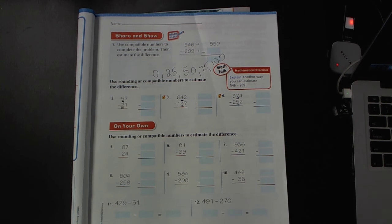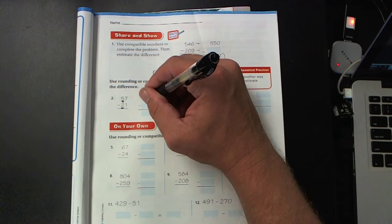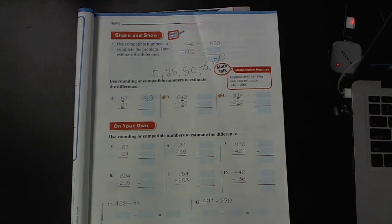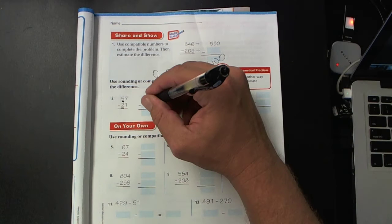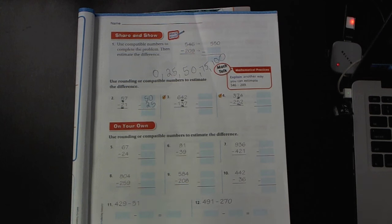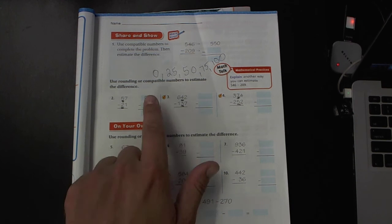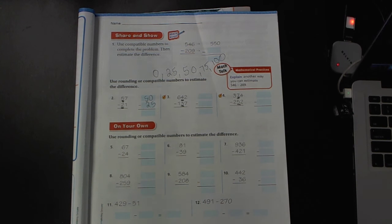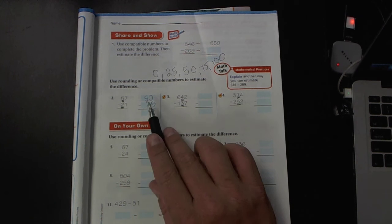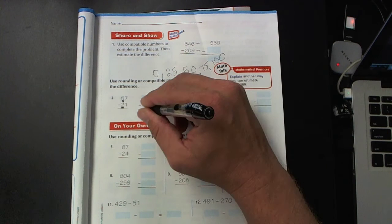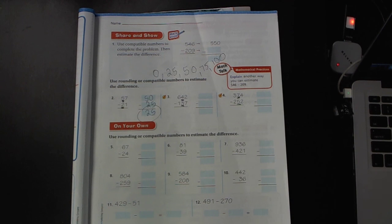So we ask ourselves, is 57, what is it closer to? Let's get some volunteers. You'll forever be a part of the video. 57 becomes 50 and 21 becomes 25. So now, because these are easy numbers to work with, we talked about how they're comparable to money, quarters and dollars and that sort of thing. So 50 cents minus 25 cents is 25 cents. Make sure you circle your final answer so that it's easy to see in the midst of your work.